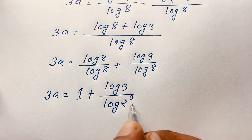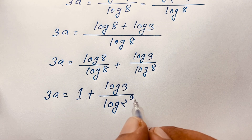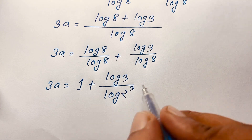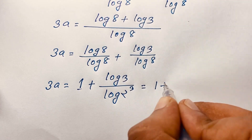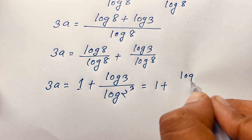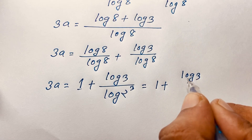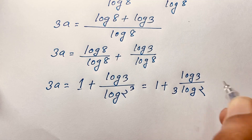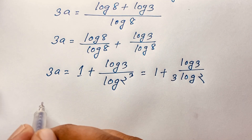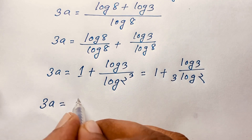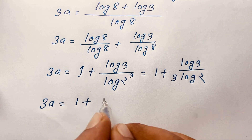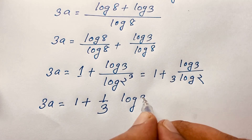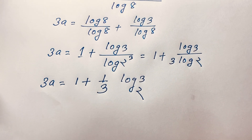Now 8 equals 2 to the power 3. Since 2 to the power 3 equals 8, this exponent moves in front. So you can see that it will be 1 plus log 3 over 3 log 2. Therefore, 3A equals 1 plus one-third times log 3 base 2. This is our expression before the final step.